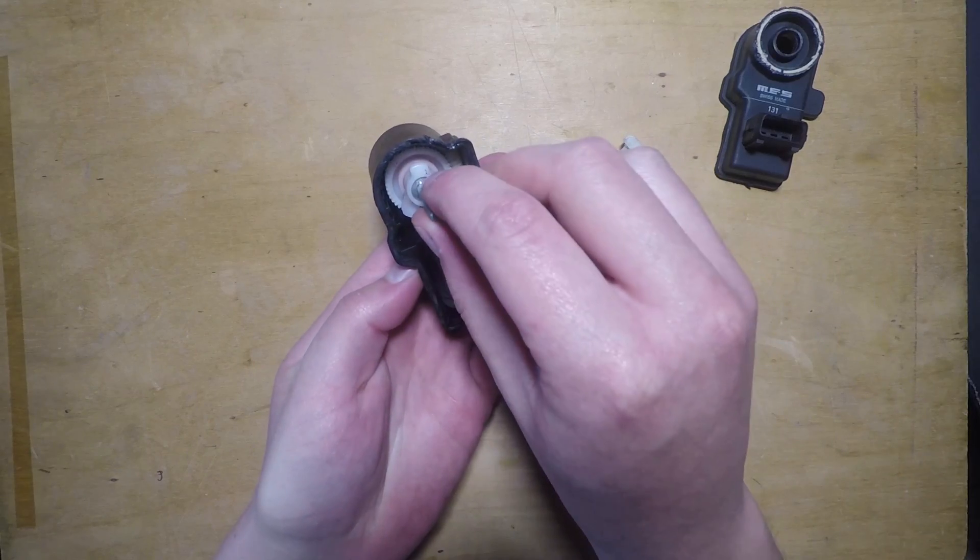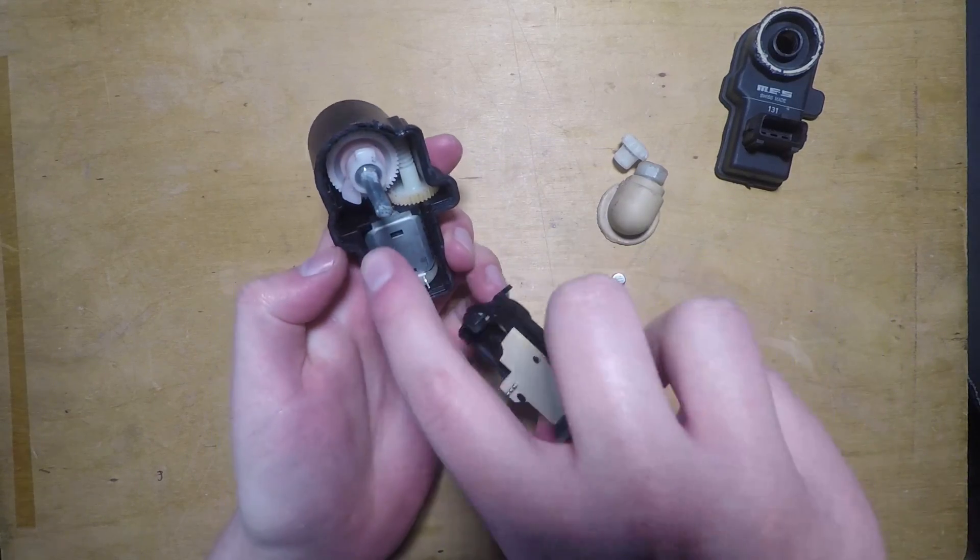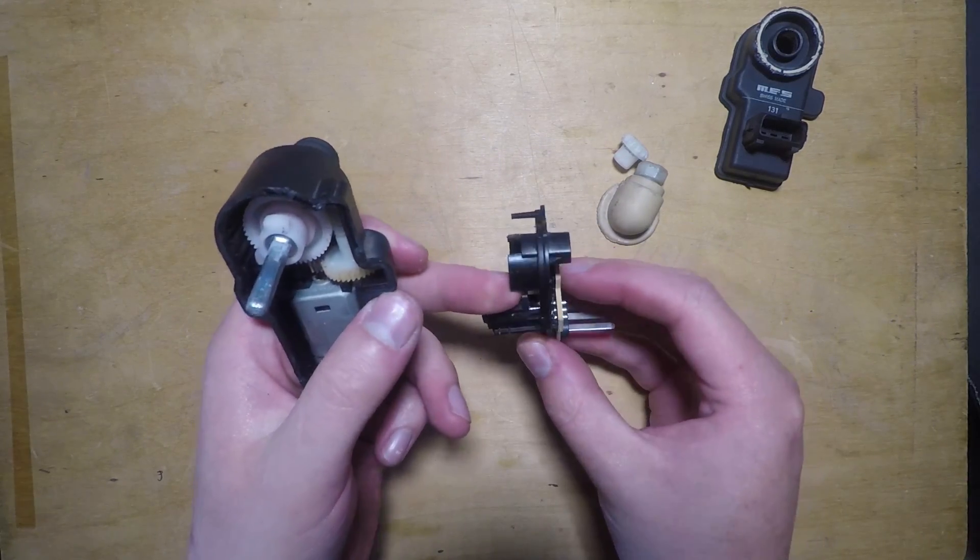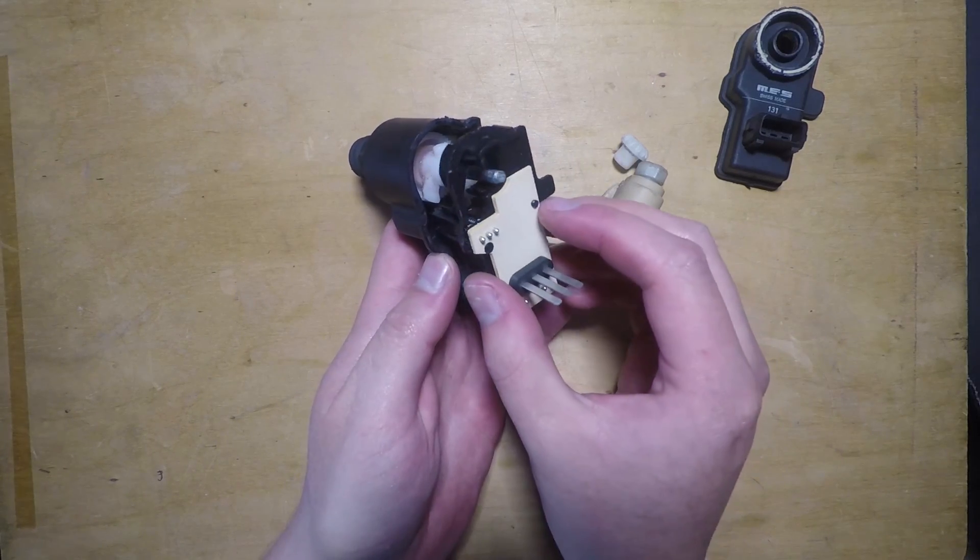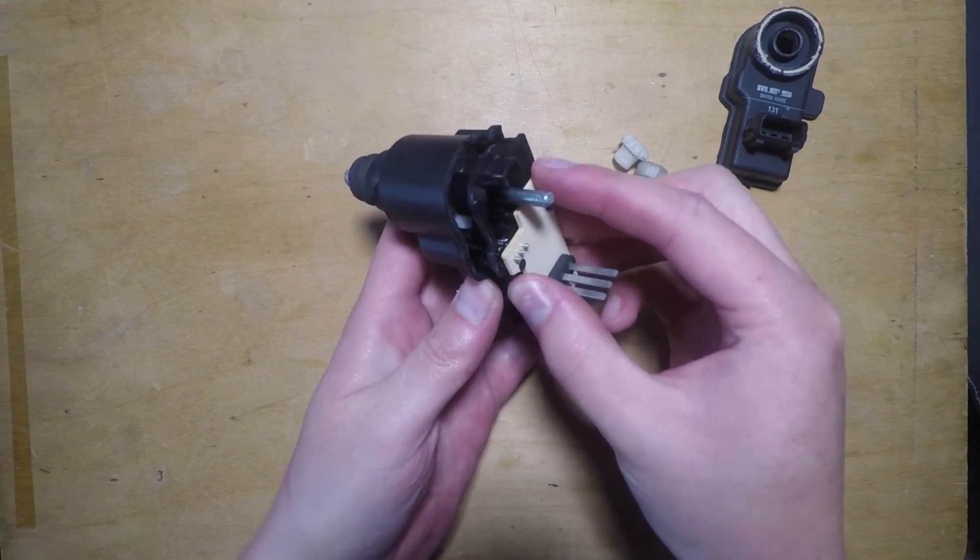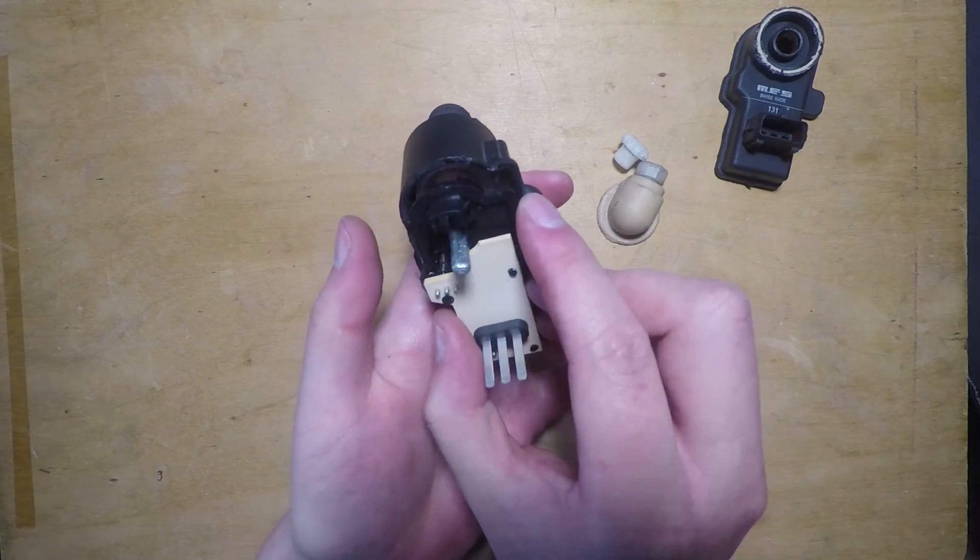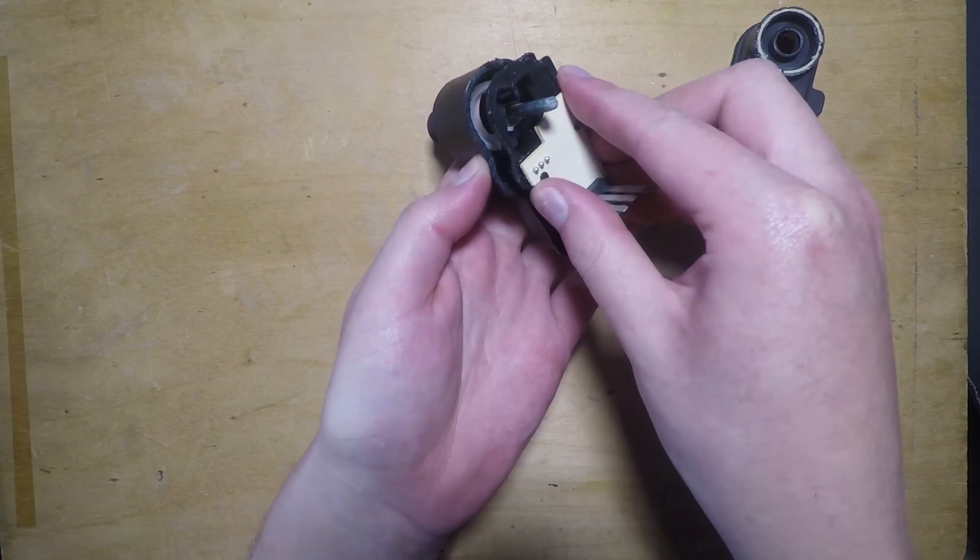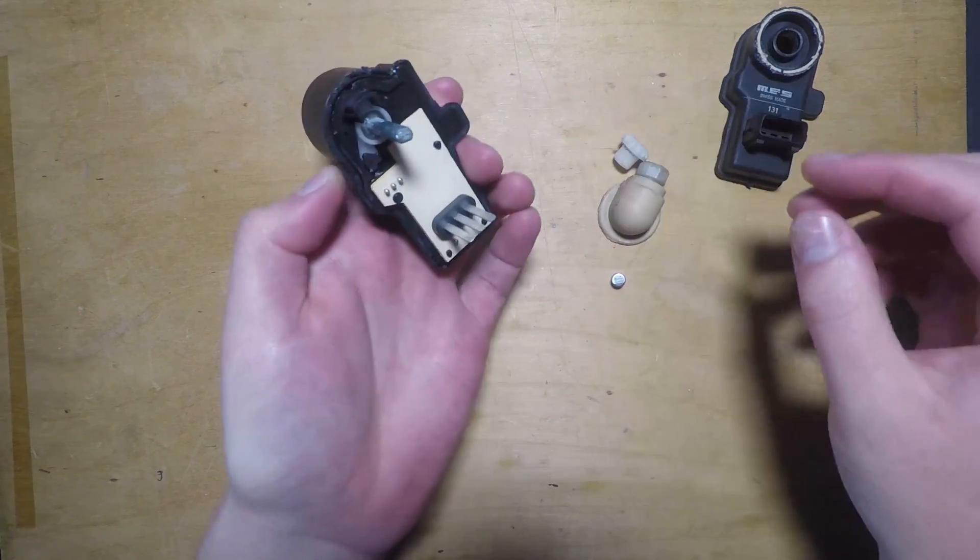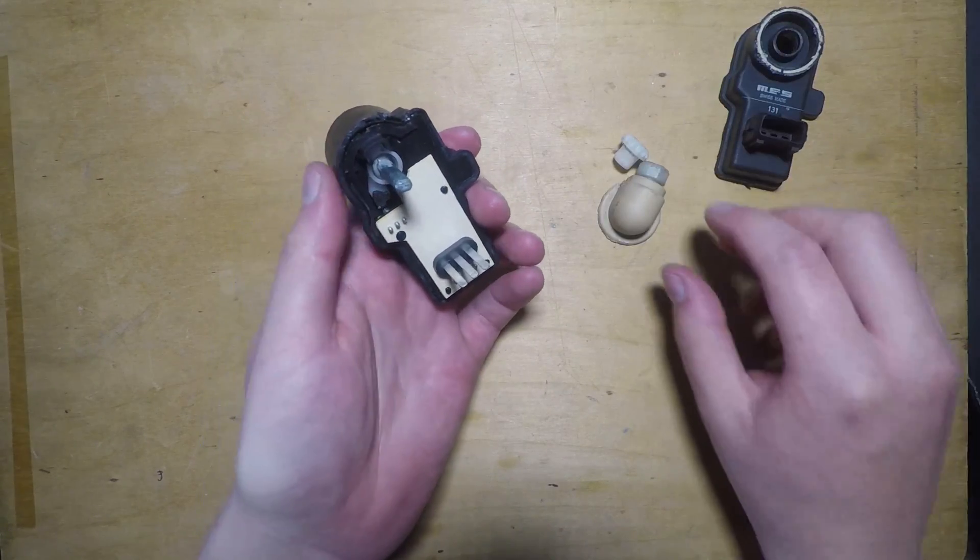So this goes in. This must be in this orientation because this little piece here is what pushes on the potentiometer. So that goes in like that. It has to be pretty much perfectly aligned, otherwise it won't go in. There we go, that goes in like that.